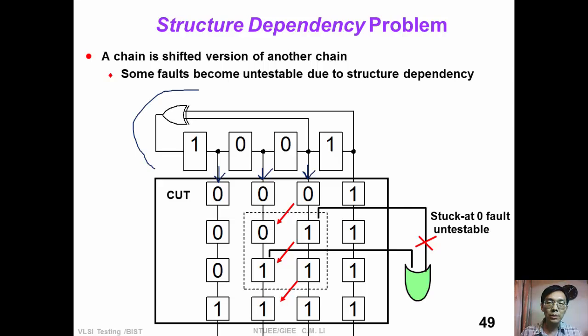However, due to the shift feature of LFSR, the bits on the diagonal lines are identical. So this one is equal to this one and this one must be equal to this one. Because of this feature, the stuck-at-0 fault becomes untestable.